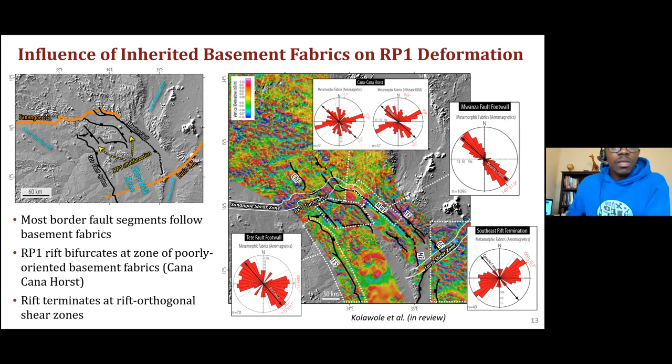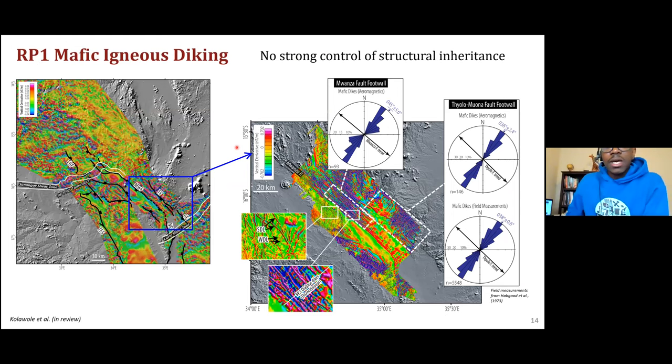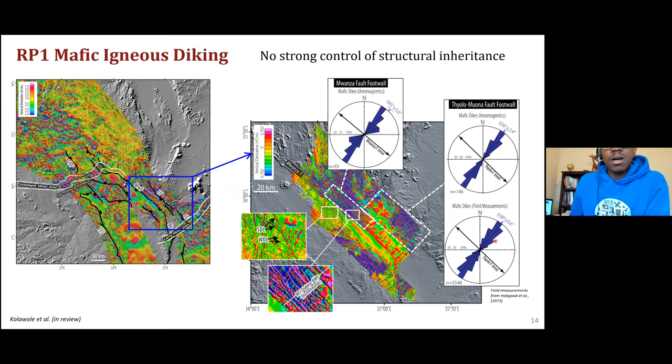The RP1 igneous dykes — as mentioned, RP1 was magmatic — primarily trend northeast-southwest. This has been published in several papers and geological reports by the Geological Survey of Malawi. Since these RP1 dykes are orthogonal to the rift trend and the border fault trend, and they primarily dominate this northeastern part of the basin, this is an interesting structural relationship.